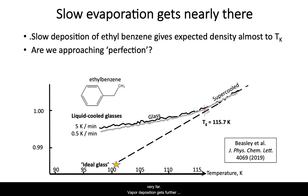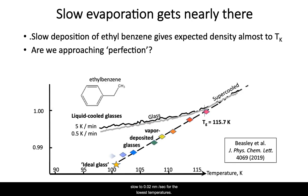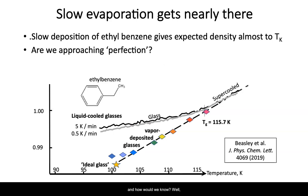Here's data for vapor-deposited ethylbenzene. The deposition rate has to slow considerably — to 0.02 nanometers per second — for the lowest temperatures. Doing that, one can get within a few percent of Tk and about a tenth of a percent from the expected density there. Is this a perfect glass? And how would we know?